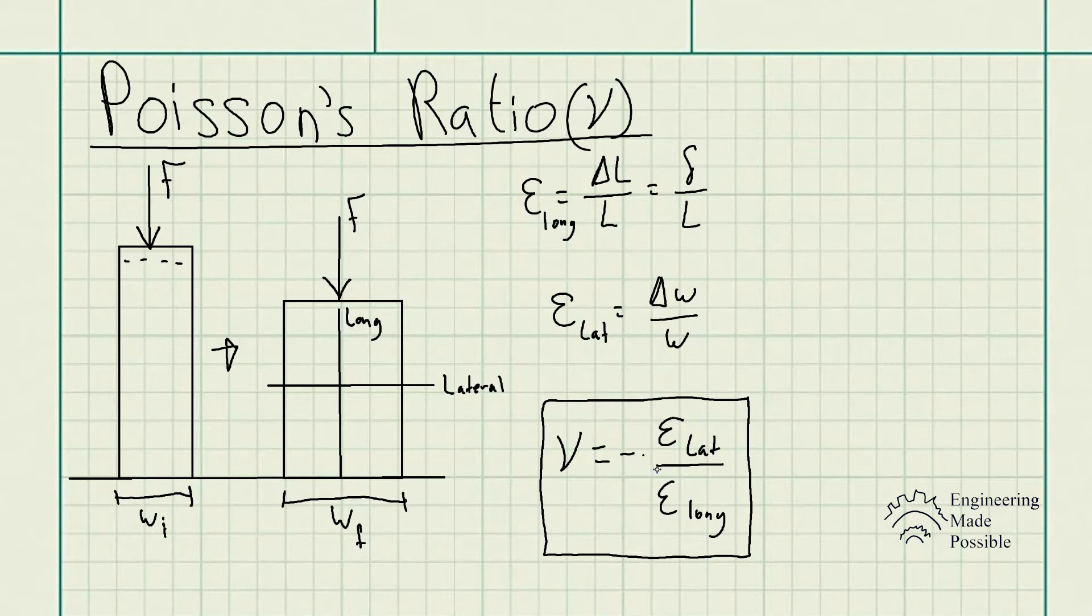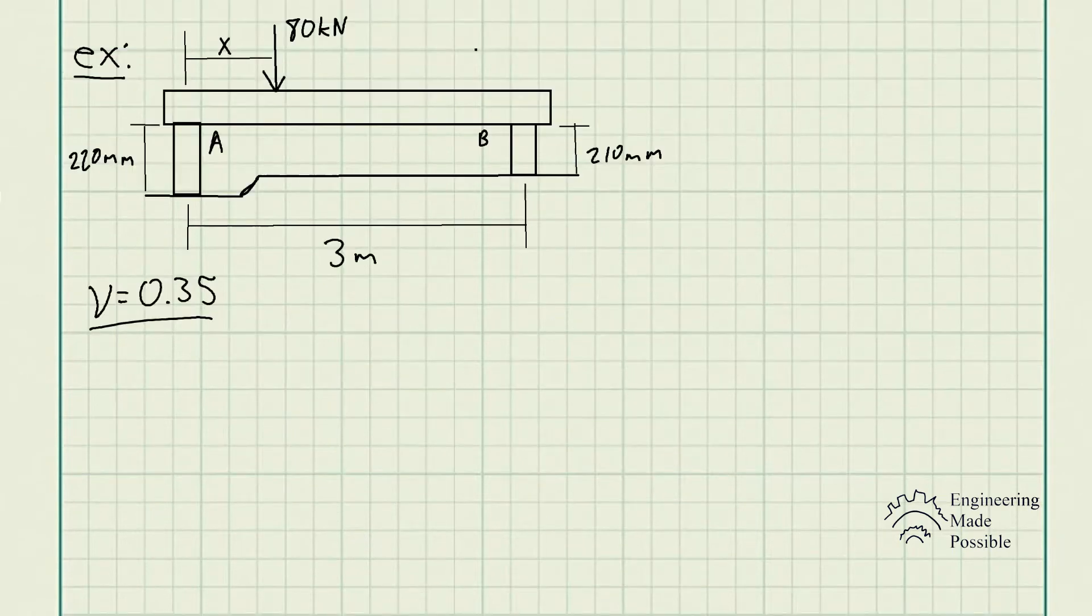Now let's go ahead and do an example using Poisson's ratio to show how useful it can be. For this problem statement, we have the rigid beam rests in the horizontal position on the two 2014-T6 aluminum cylinders having the unloaded lengths shown. If each cylinder has a diameter of 30 millimeters, determine the placement X of the applied 80 kN load so that the beam remains horizontal.